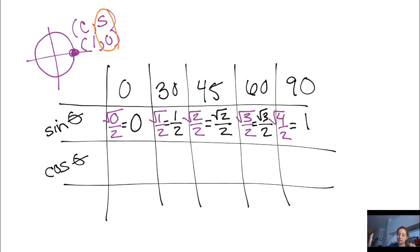Now the cosine is very similar. You do begin all over 2. Now instead of going the numerators from 0 to 4, you go in the opposite direction. You go from 4 down to 0. And the way I double check this is I first write 4, 3, 2, 1, 0.